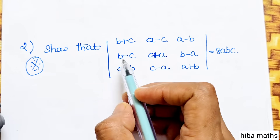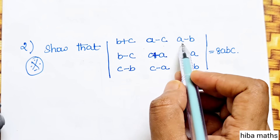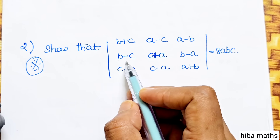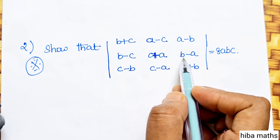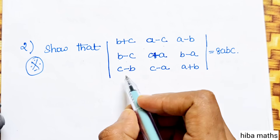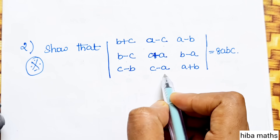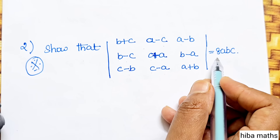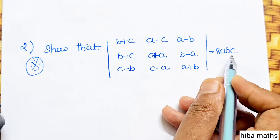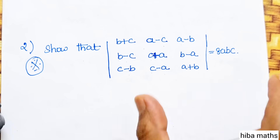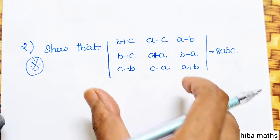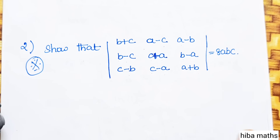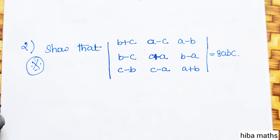Show that the determinant with entries B plus C, A minus C, A minus B in the first row; B minus C, C minus A, B minus A in the second row; C minus B, C minus A, A plus B is equal to 8 times A times B times C. This is the question — we will prove the determinant value equals 8ABC.